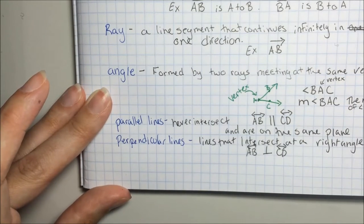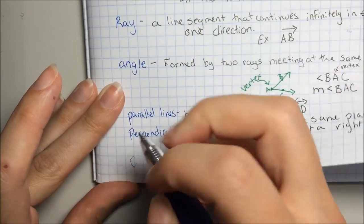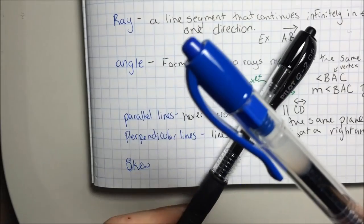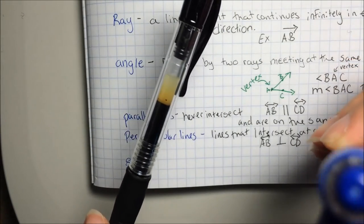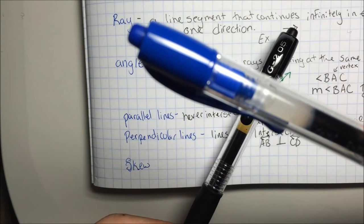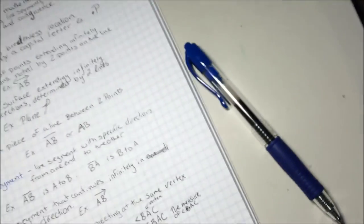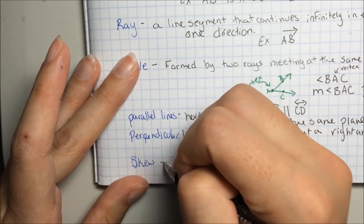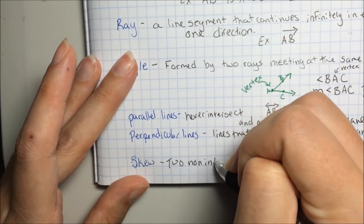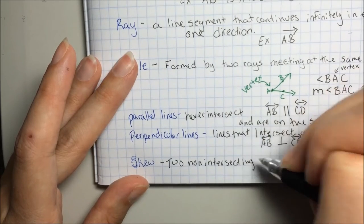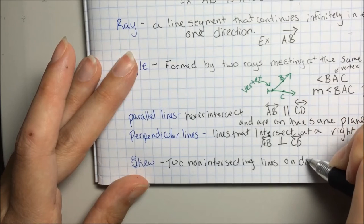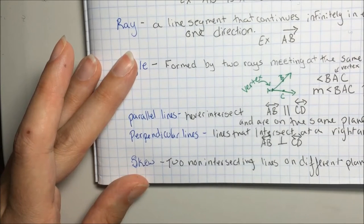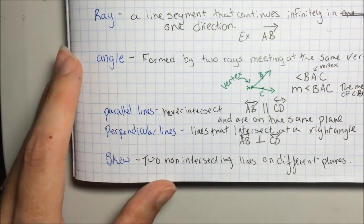The last relationship lines can have, besides being just plain intersecting, is skew. Skew lines are kind of like this. If you notice, there's quite a little bit of space in between my two pens. They're on two different planes, and they never intersect. So, skew: two non-intersecting lines on different planes. They're not parallel, but they're not intersecting. All right, let's turn our page.